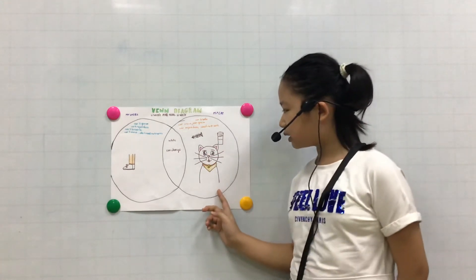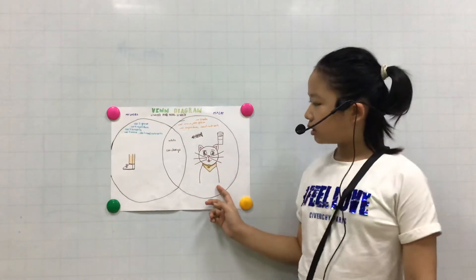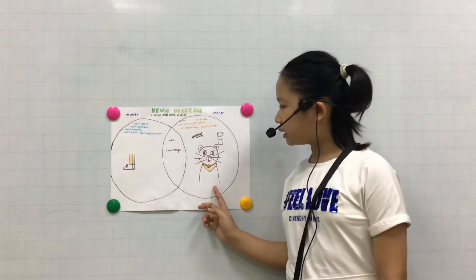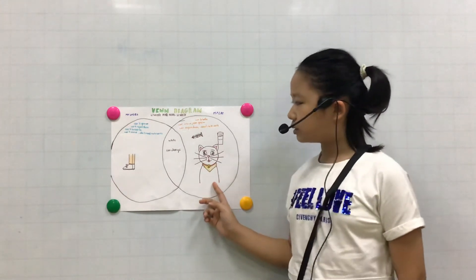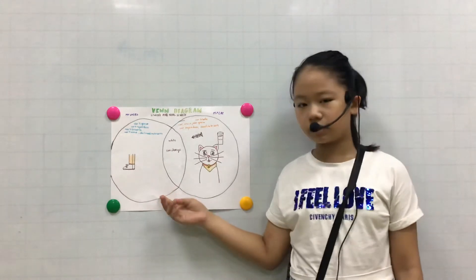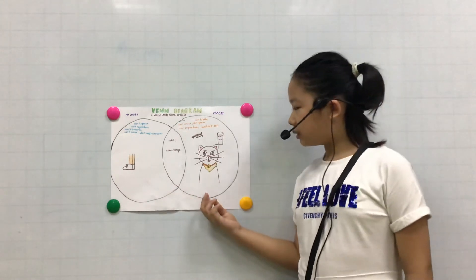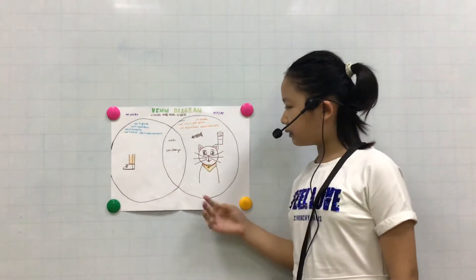The last difference is my cat can reproduce but my shoes cannot reproduce. It reproduces by giving birth.